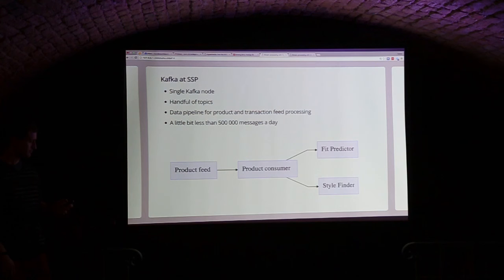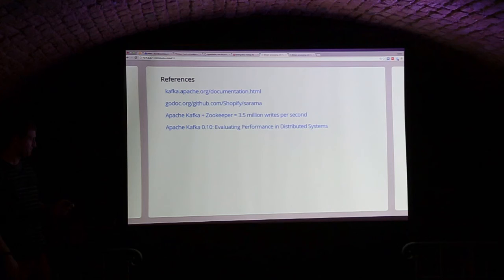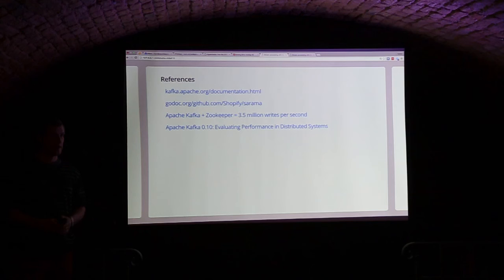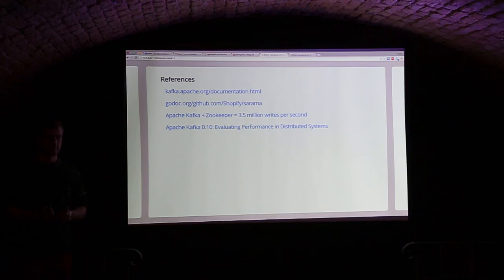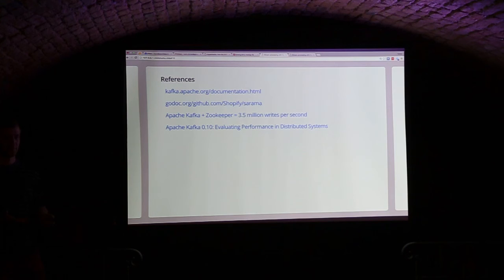There are some links here: the LinkedIn presentation from a few years back where I got the architecture images, and a really interesting blog post about how Heroku performance-tested Kafka — they offer it as a managed service now. They found they couldn't saturate the CPU or the disk; it was the network that broke down in the end. That's just how well Kafka is architected: the hardware breaks down before the process does. That was basically everything.